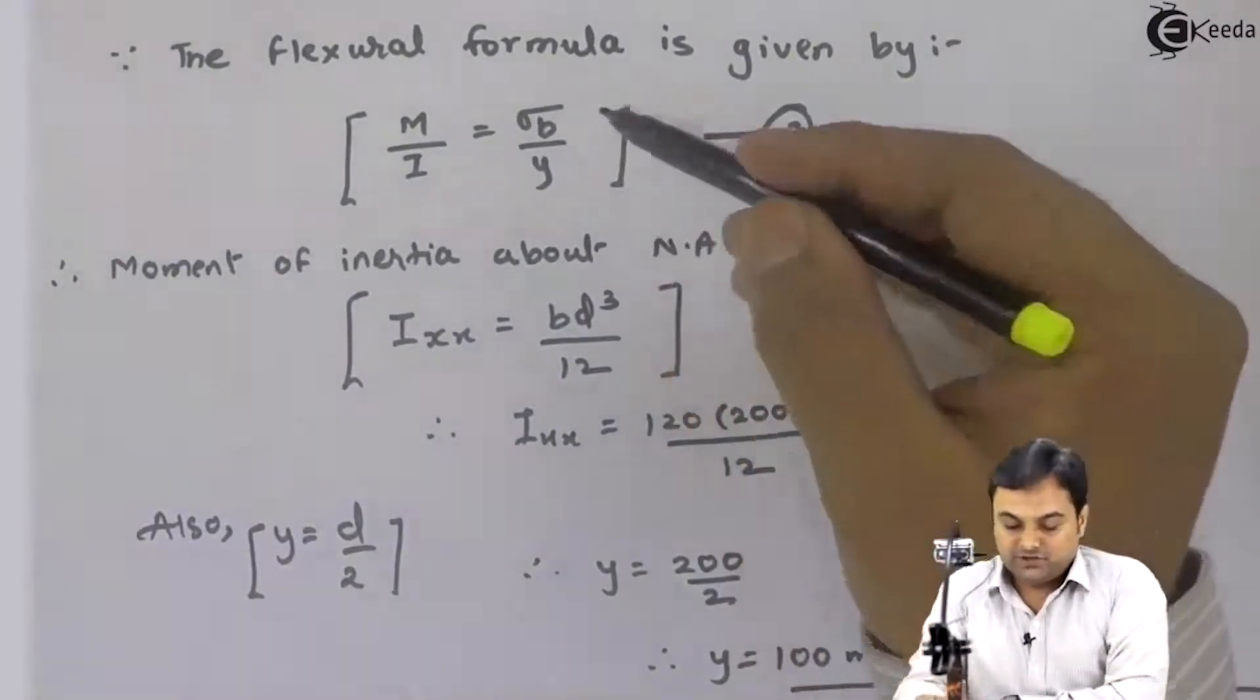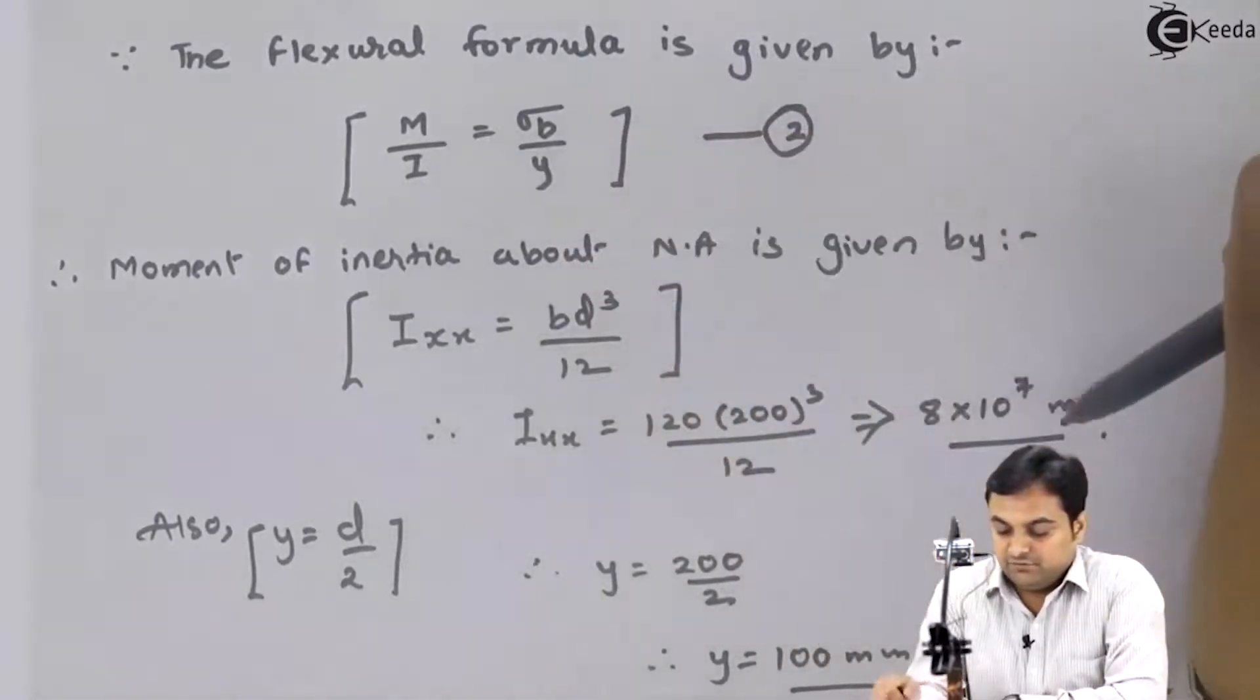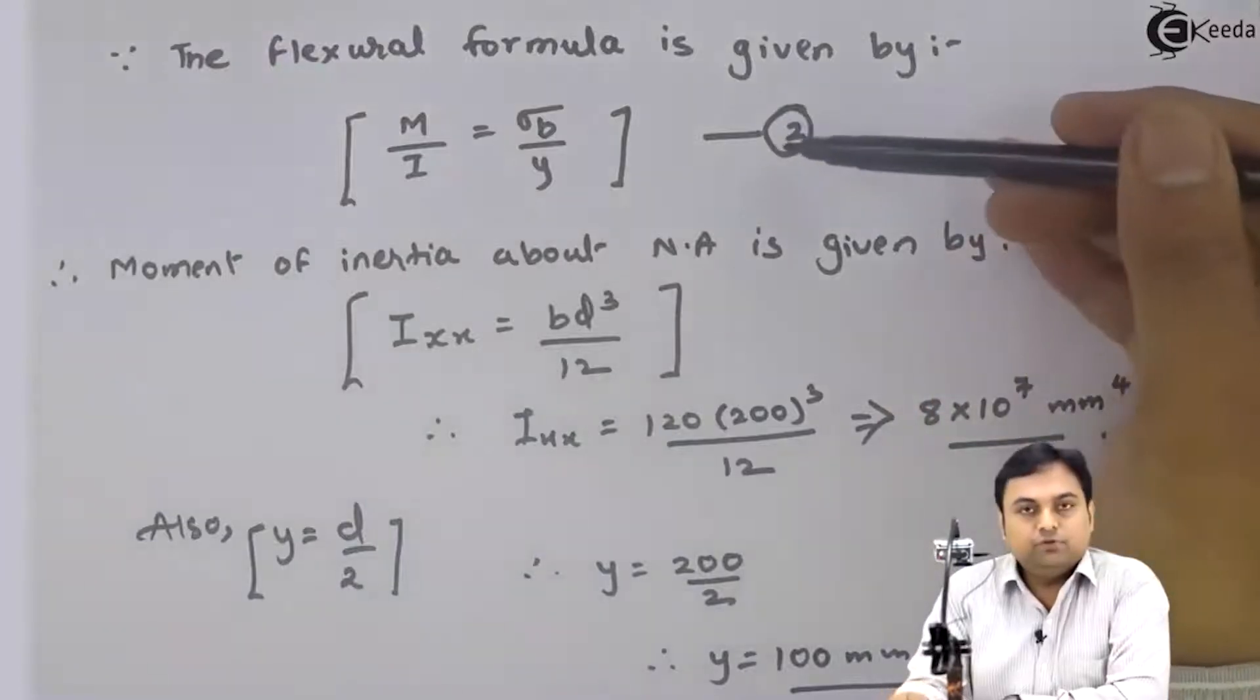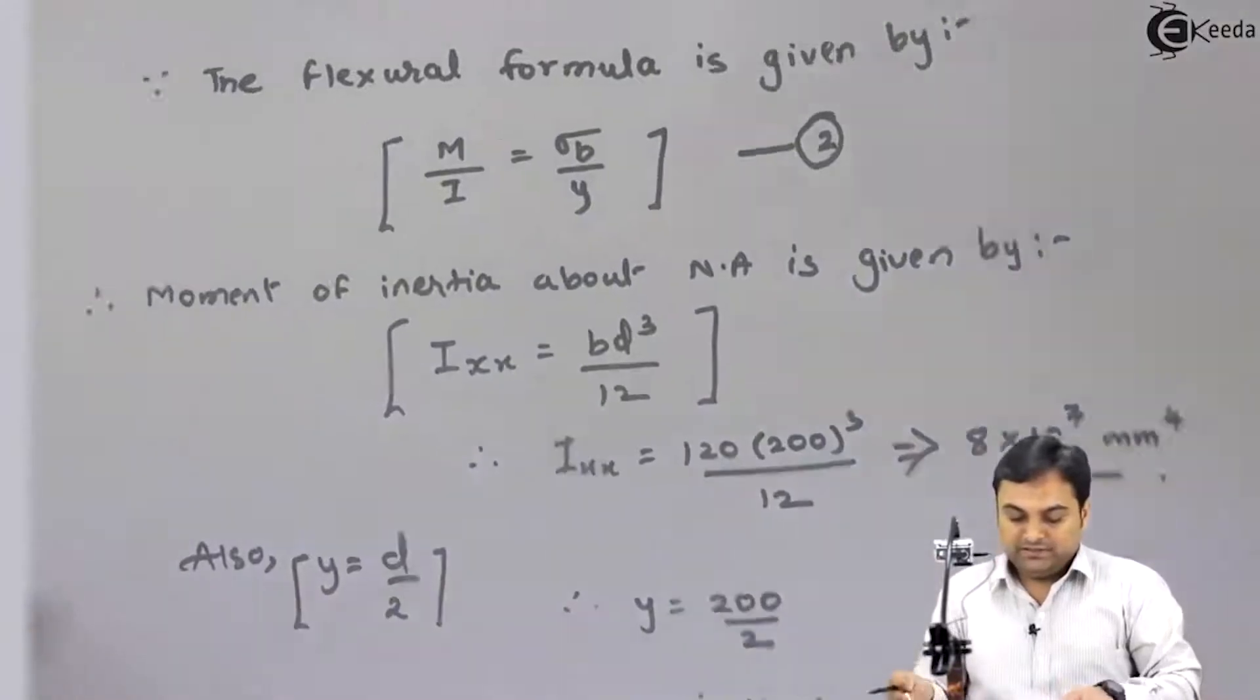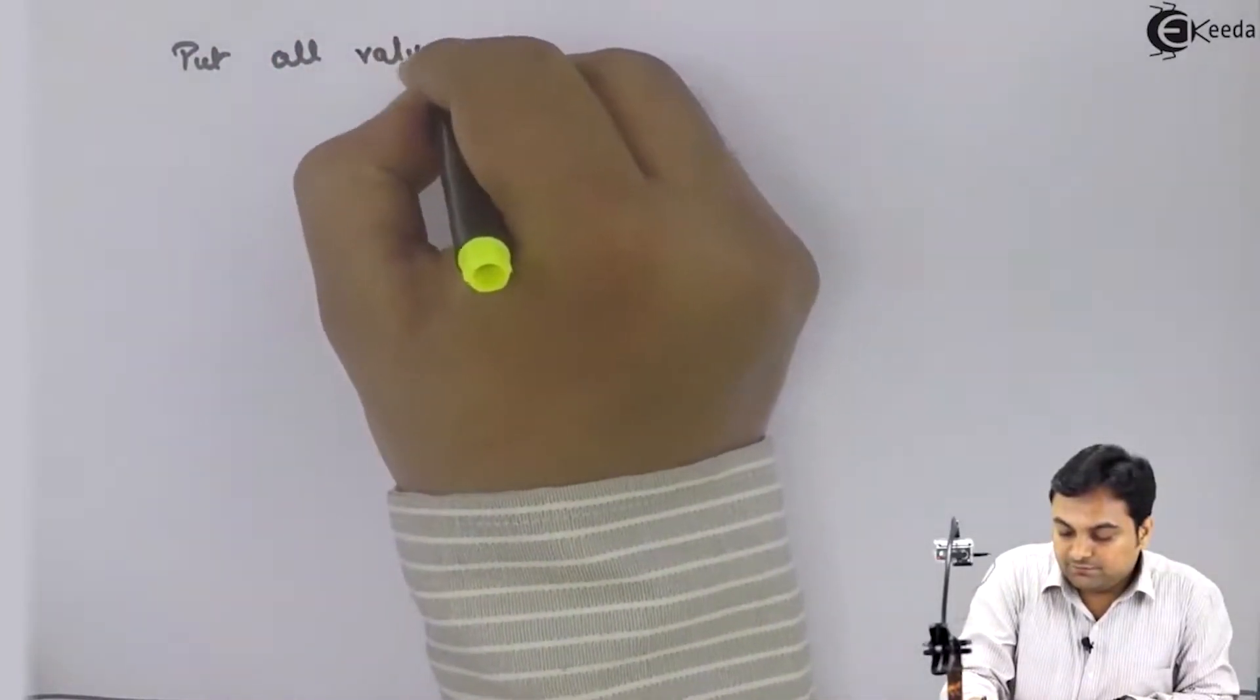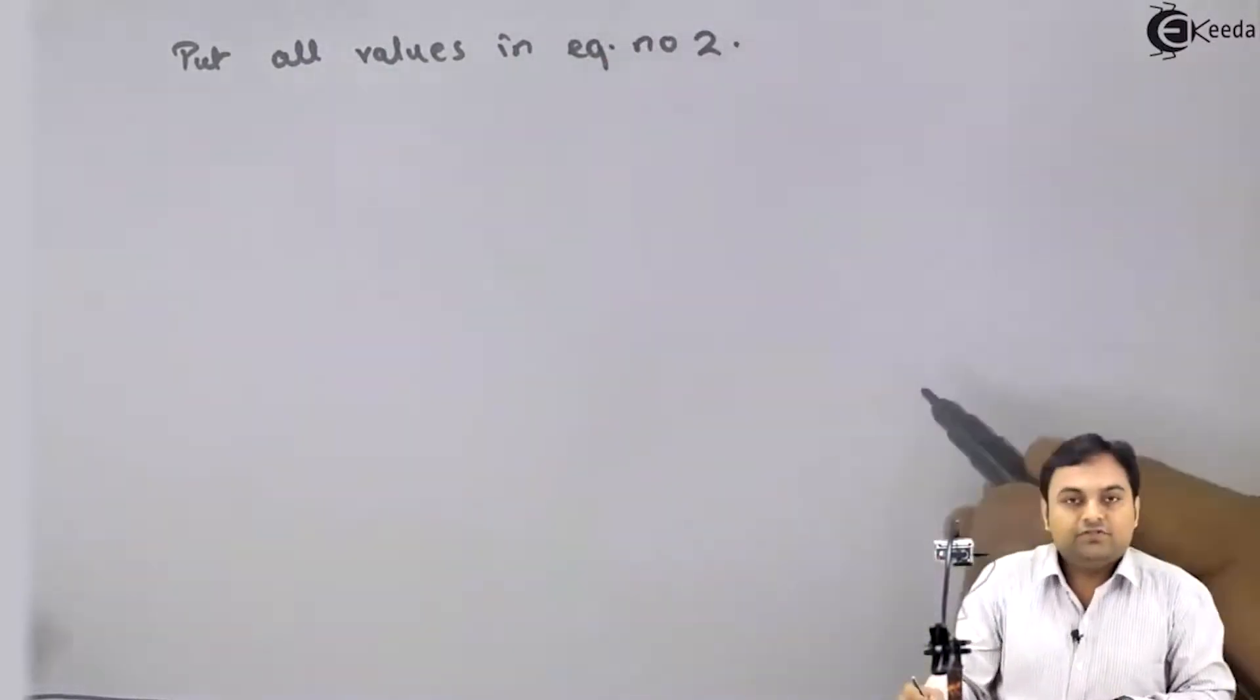Now you can see in equation 2, we can easily put capital M from equation 1. I value we have got, sigma b already given in the question, y we have calculated. So we can very safely put all values in equation number 2 and get the unknown answer. Put all values in equation number 2.